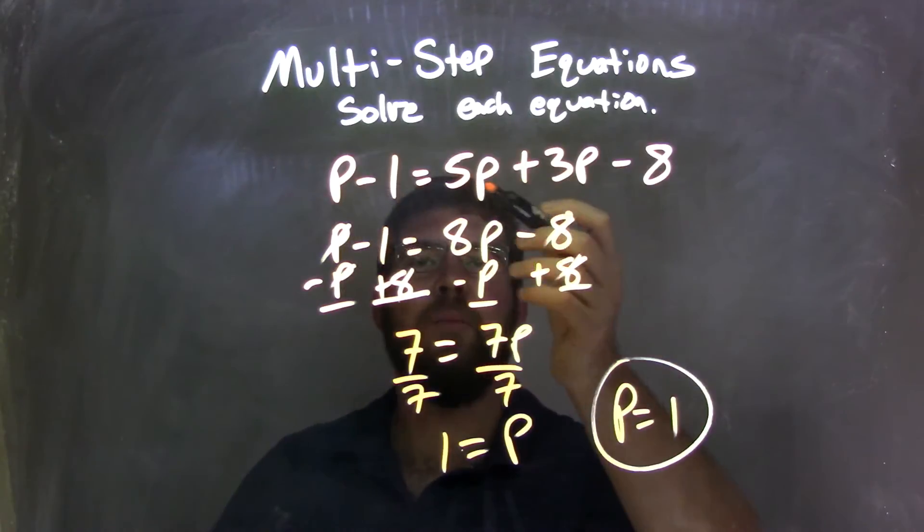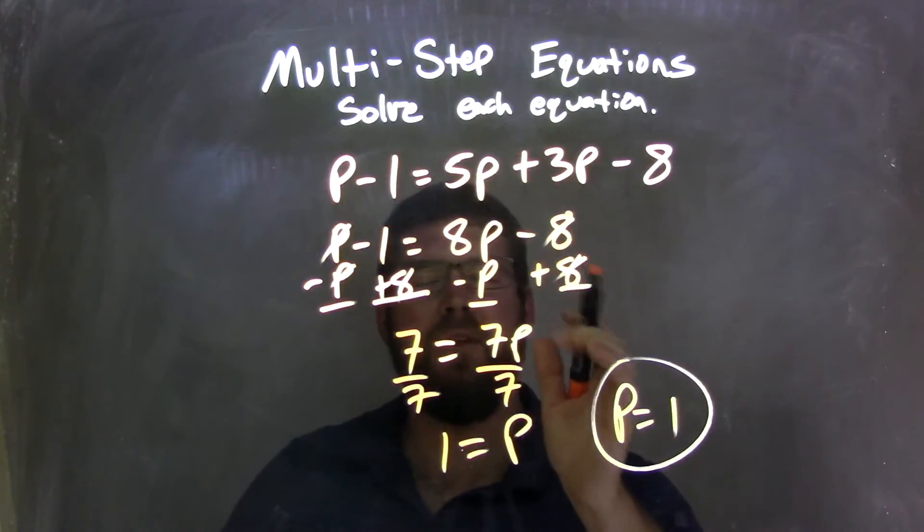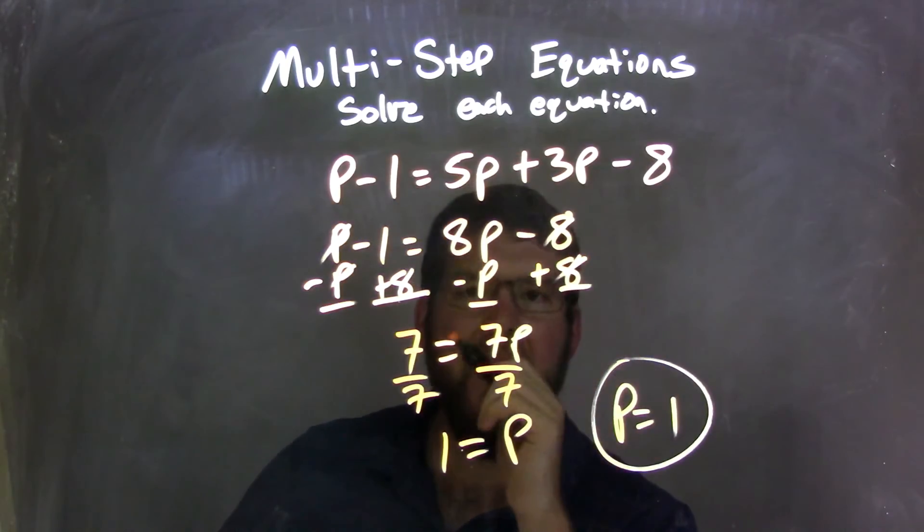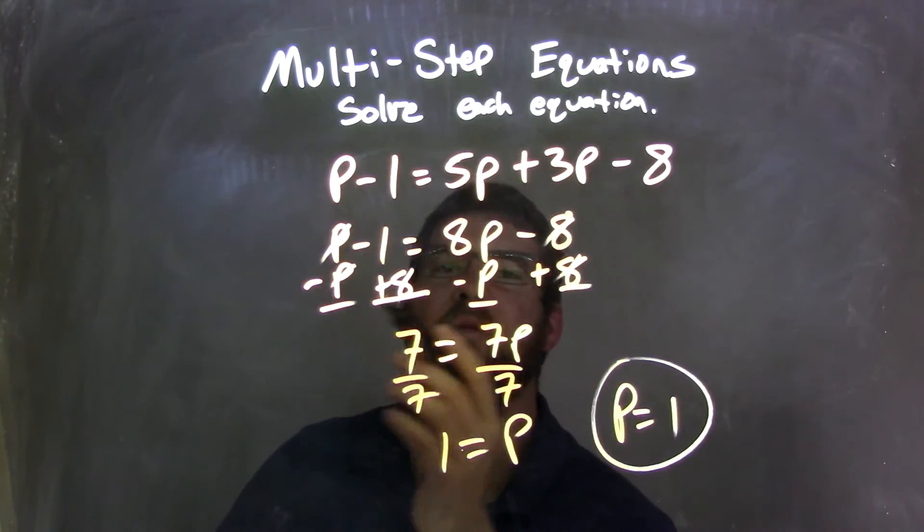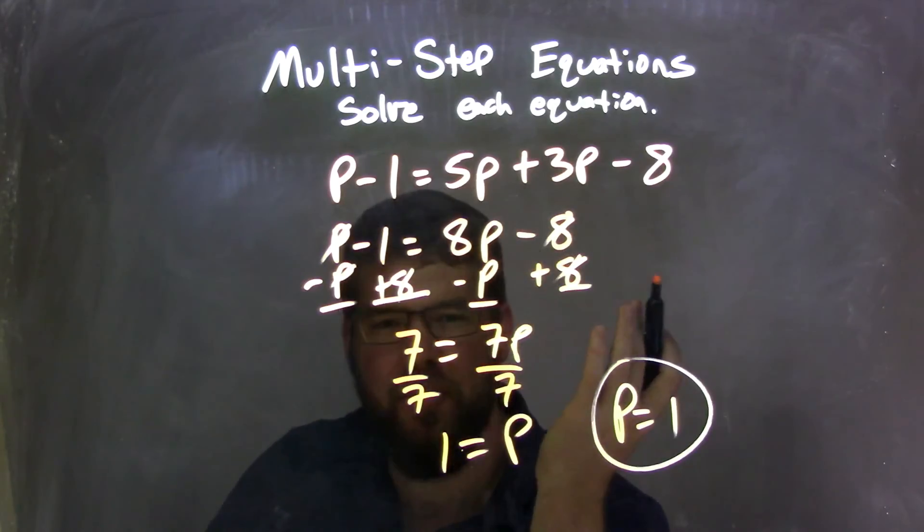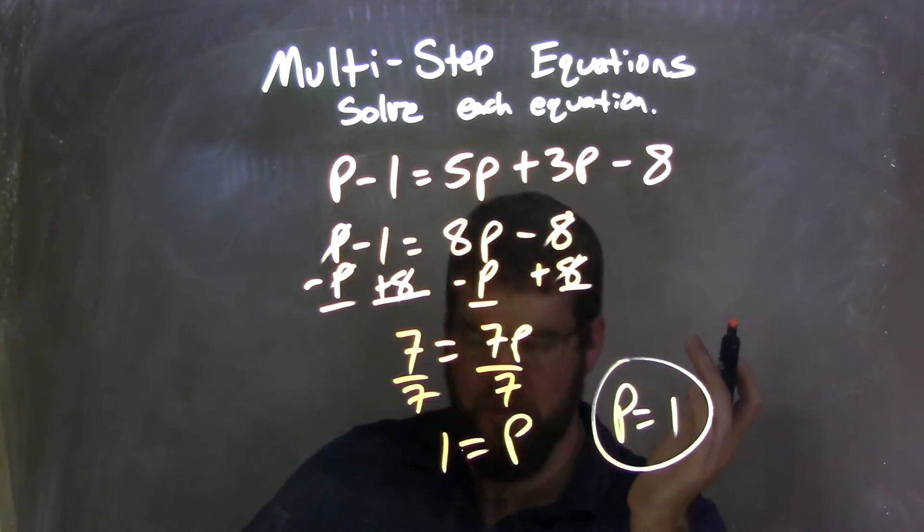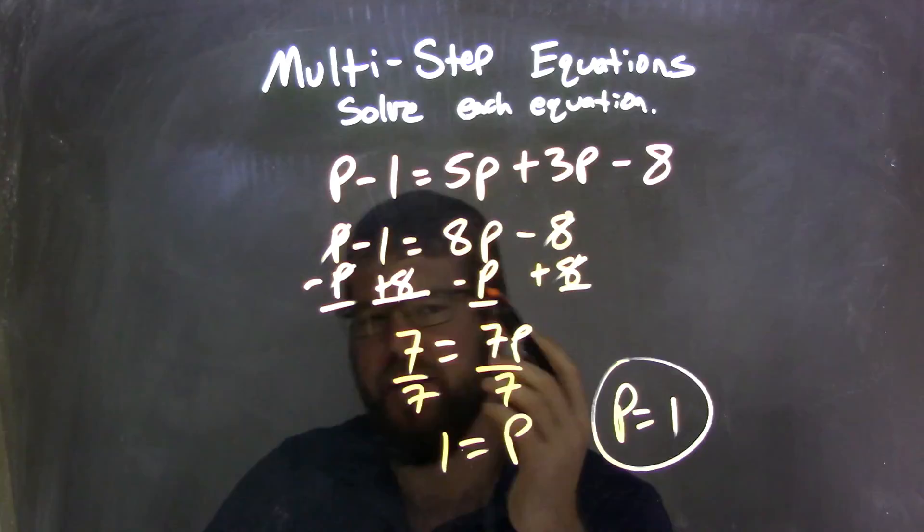So let's start over from the beginning. We added 5p plus 3p first. We kind of simplified each side of the equal sign, combined what we could. Then I brought my p over to the right and my numbers to the left. That was a personal preference. It doesn't matter which way you try to do it first. You could have brought the 8p over, and you'd have a negative. It's fine.